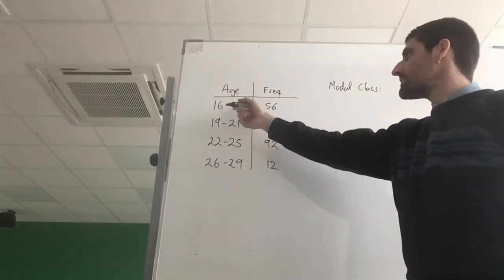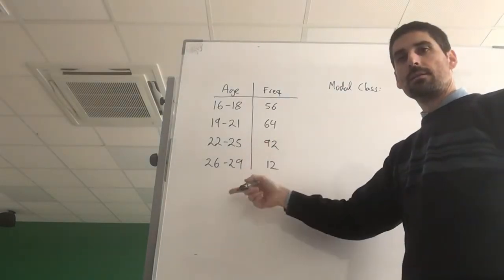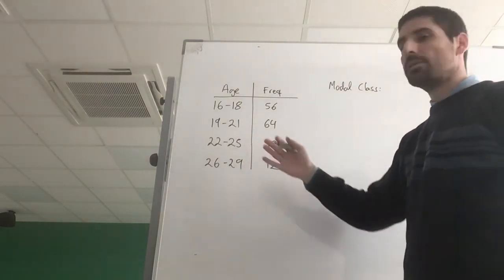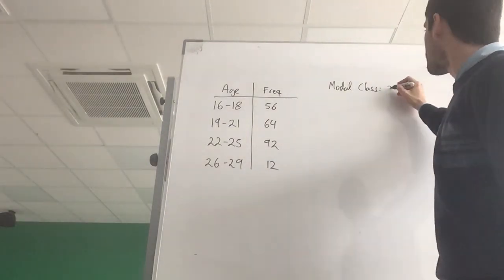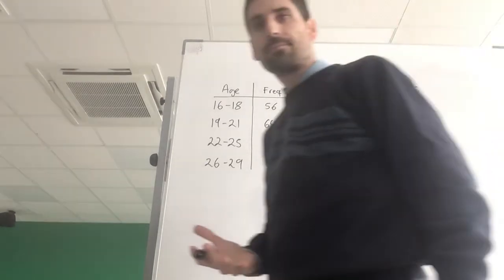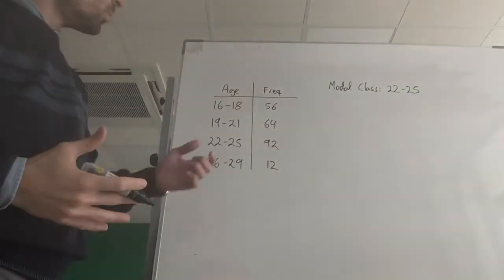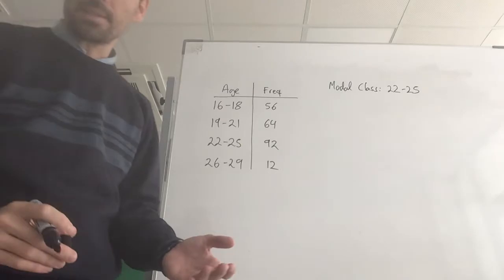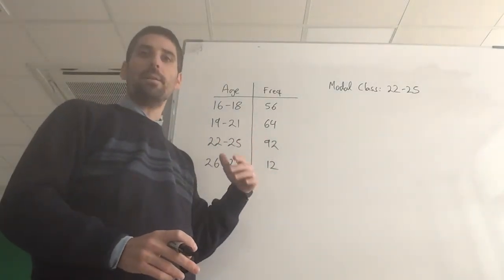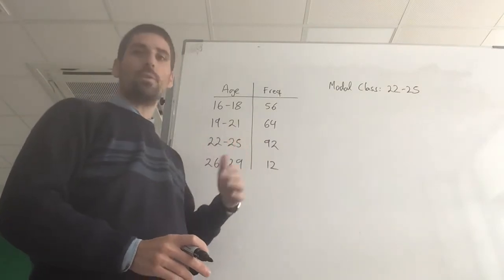Which of these categories is the most common? Well the 22 to 25 isn't it. So I don't know what the mode is but I know that the modal class, the most common category, is going to be the 22 to 25. Brilliant stuff.